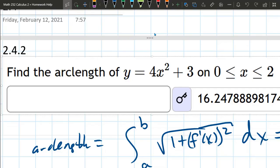This question is an arc length question. Our function is 4x squared plus 3. We're going from 0 to 2. Those are x values.